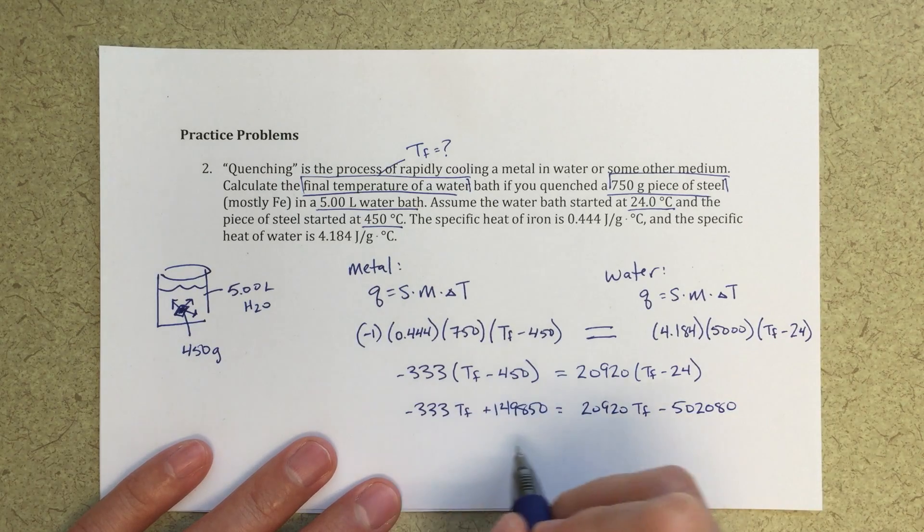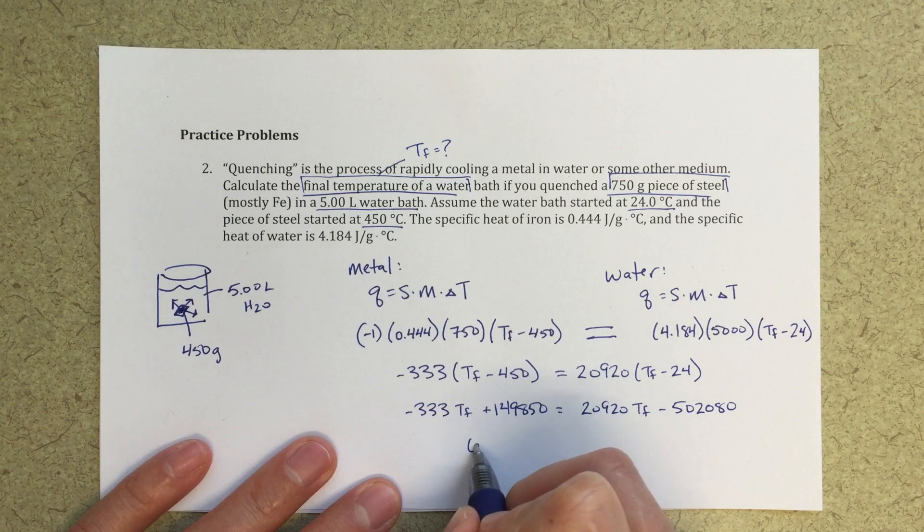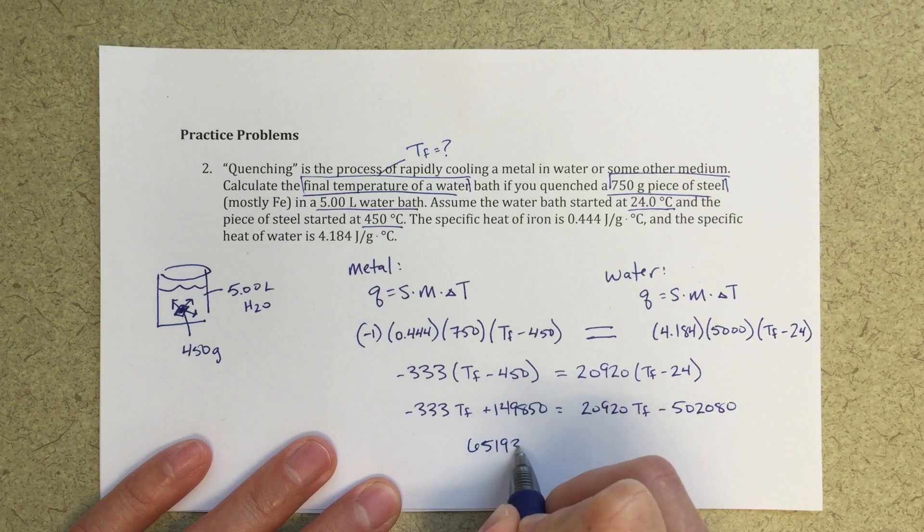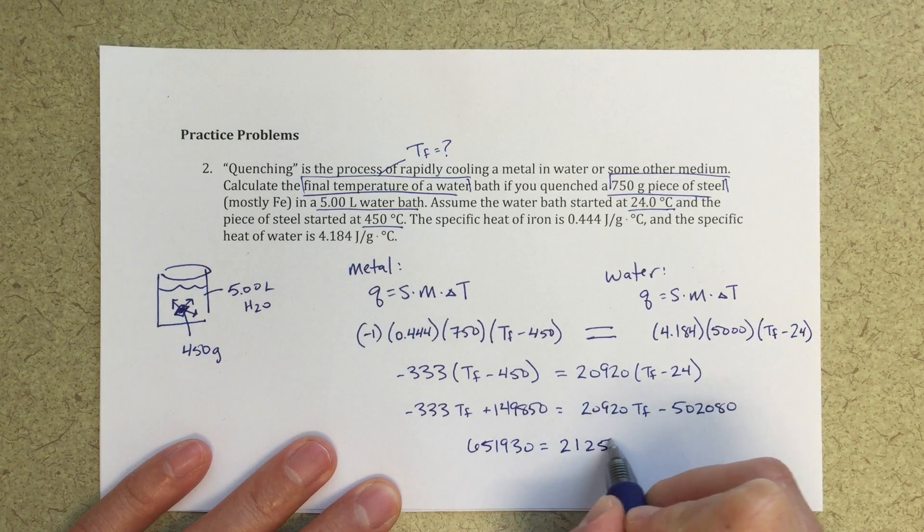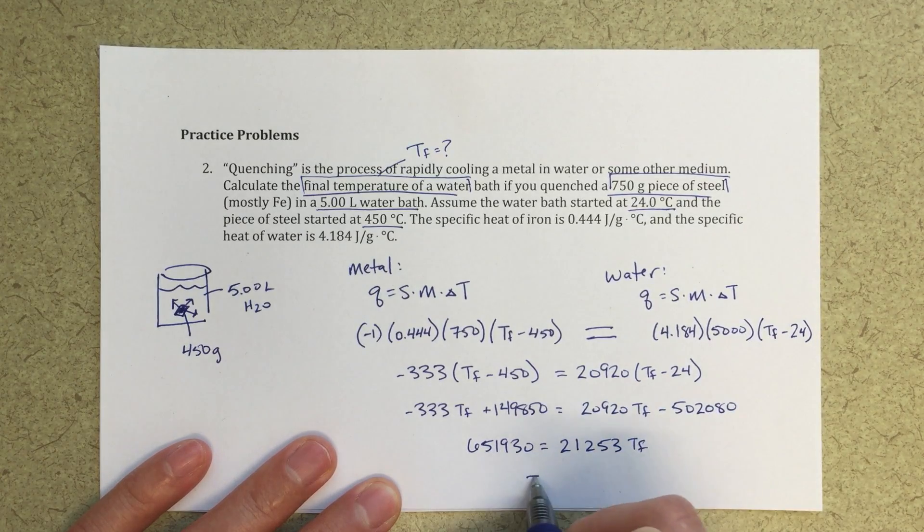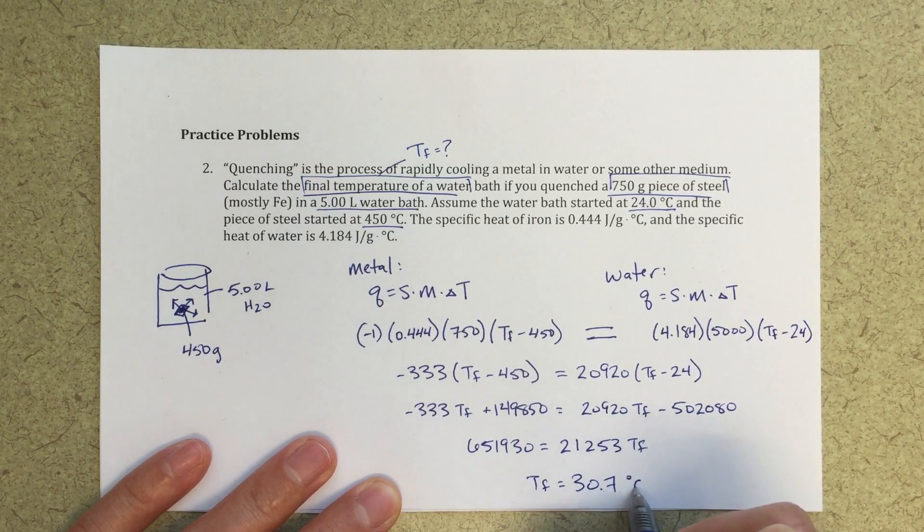I can group the like things together. So I'm going to bring this value over here, put this t final over here, and I end up with 651930 equals 21253 t final, and then finally I can solve for t final, and I've got a value of 30.7 degrees Celsius.